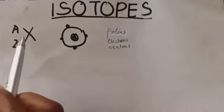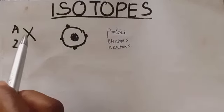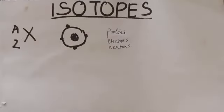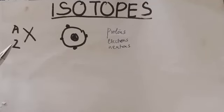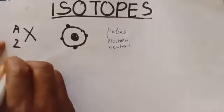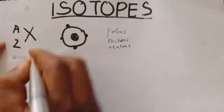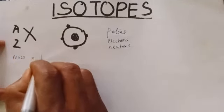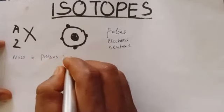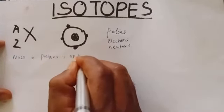We also looked at certain numbers associated with the atom. We said the mass number A is written here, while the atomic number Z is written on this side. And we further said the mass number is equal to the number of protons plus the number of neutrons.